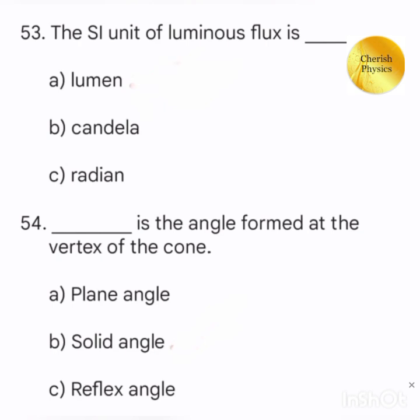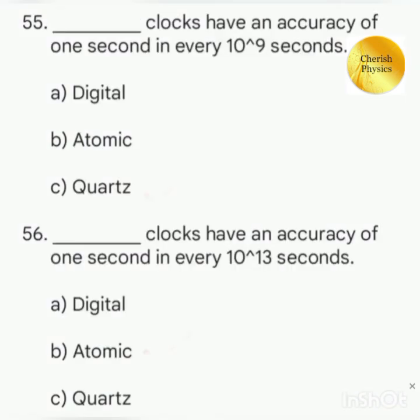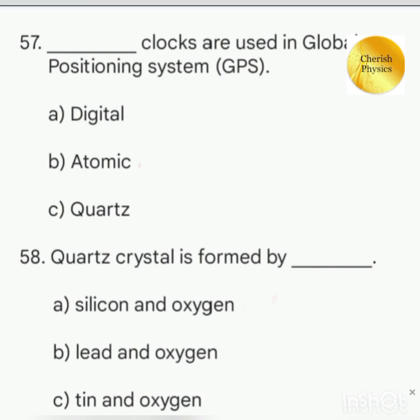Dash is the angle formed at the vertex of the cone. Which clock have an accuracy of 1 second in every 10 to the power 9 seconds? Which clock have an accuracy of 1 second in every 10 to the power 13 seconds? Which of the following clock is used in global positioning system? Quartz crystal is formed by.